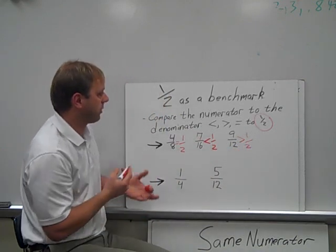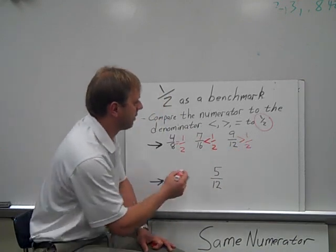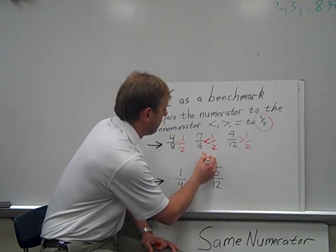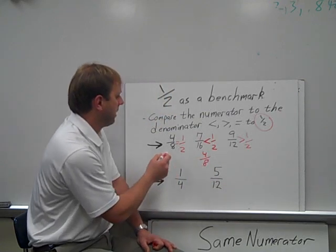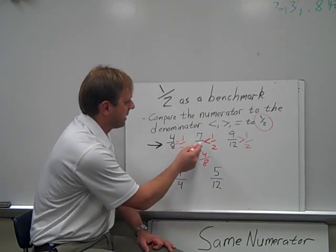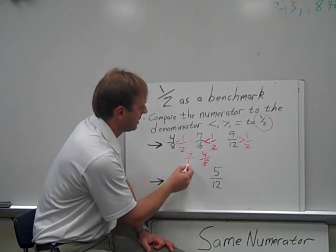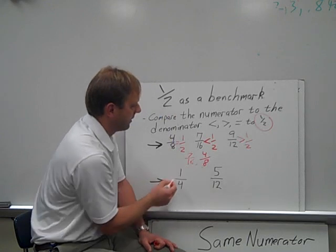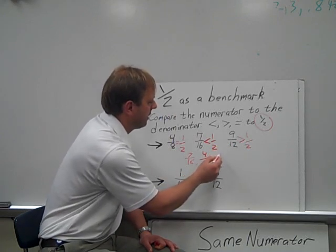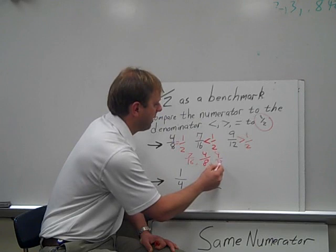So now, if I were to have to put these in order, I could start with my four-eighths, and then I know that seven-sixteenths is less than one-half. So if I were saying least to greatest, I put seven-sixteenths, four-eighths, and then I know that nine-twelfths is greater than one-half.